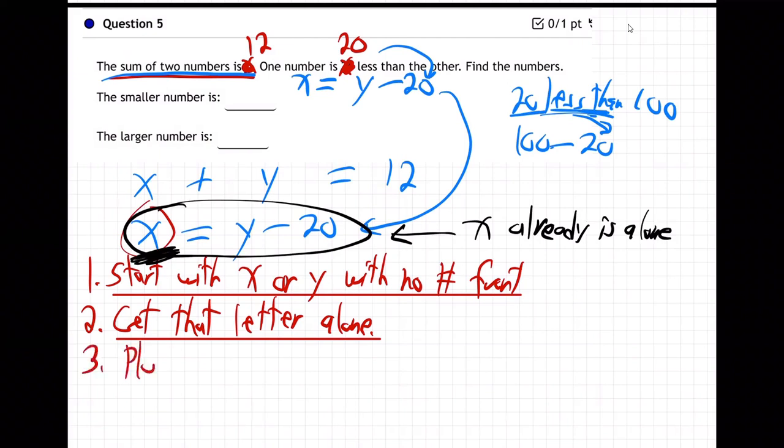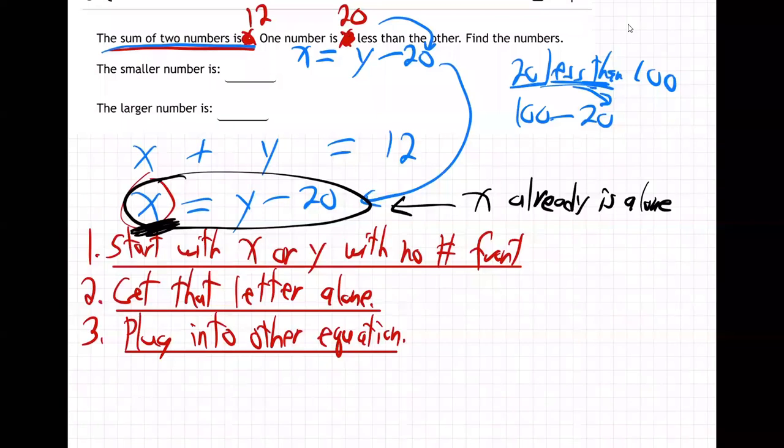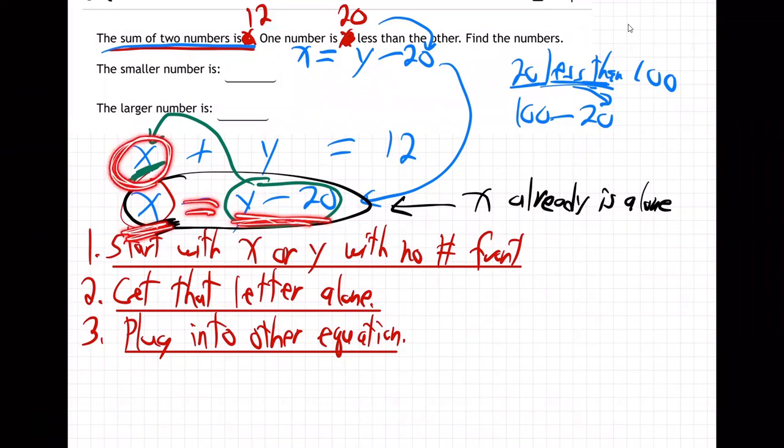Step three, plug into the other equation. So I'm going to plug into the other equation. So I'm going to take that Y minus 20 and plug it in right there for X, because that's what X equals, right? The second equation says X equals, X is the same as Y minus 20. So wherever you see X, you can replace it with Y minus 20, because X is Y minus 20.